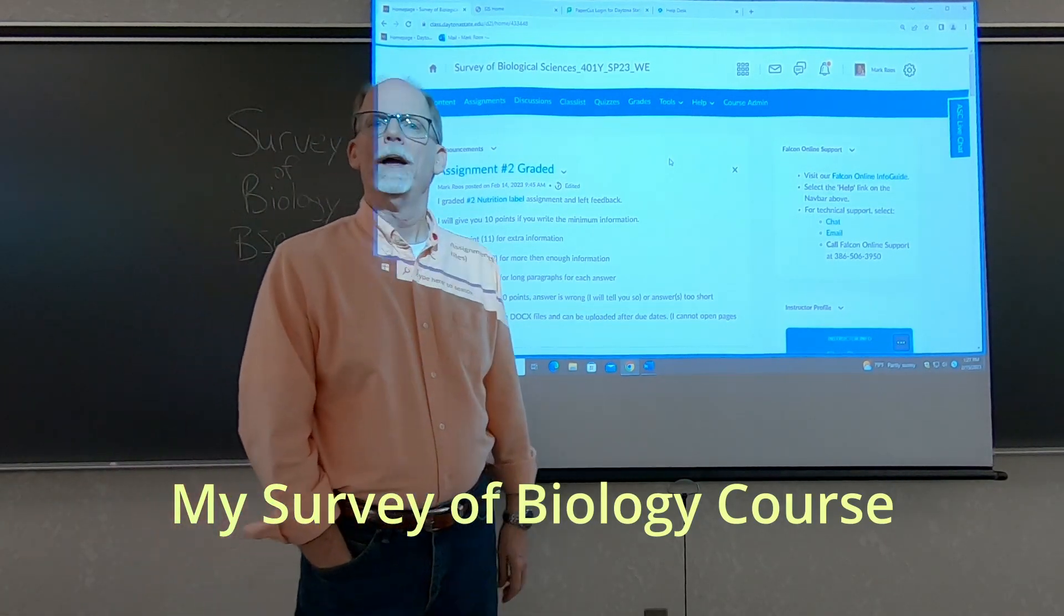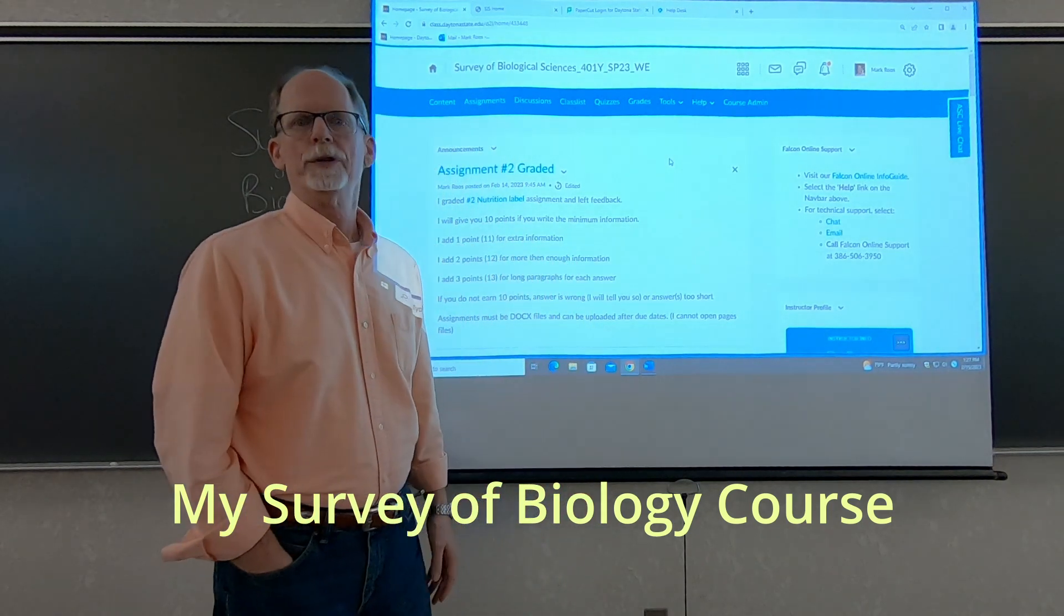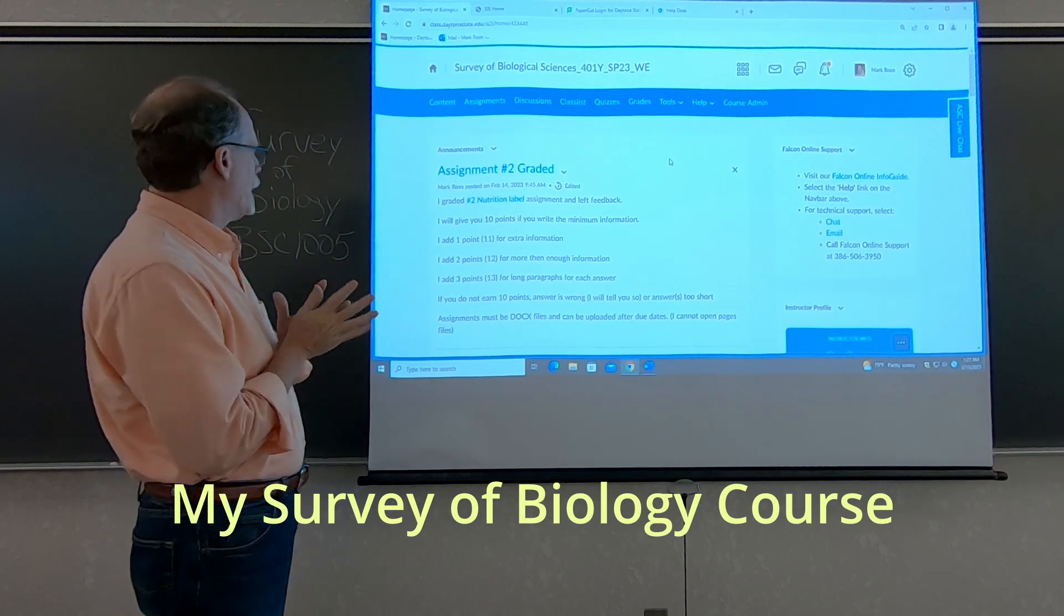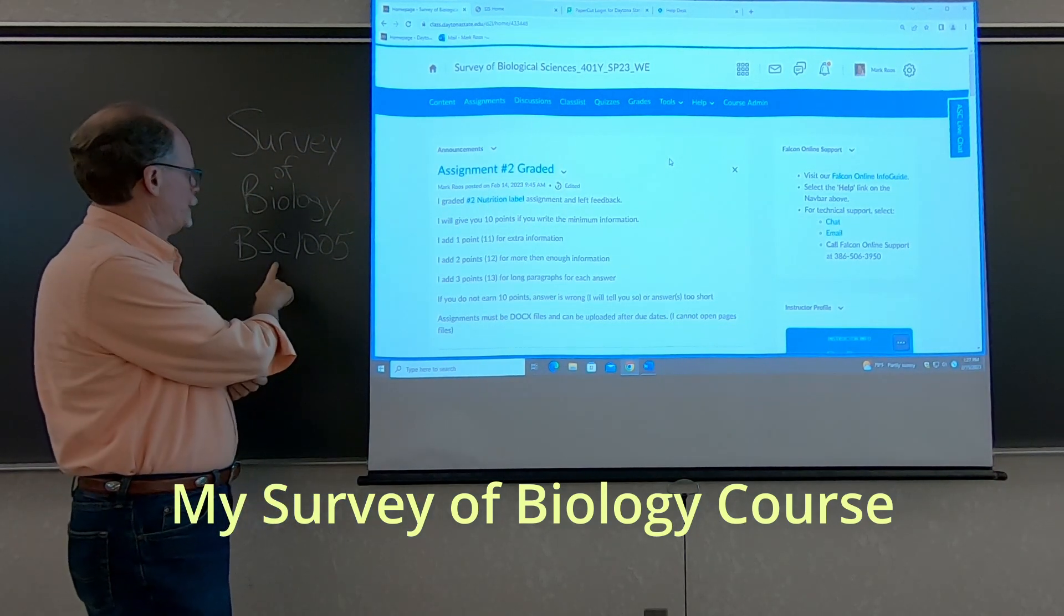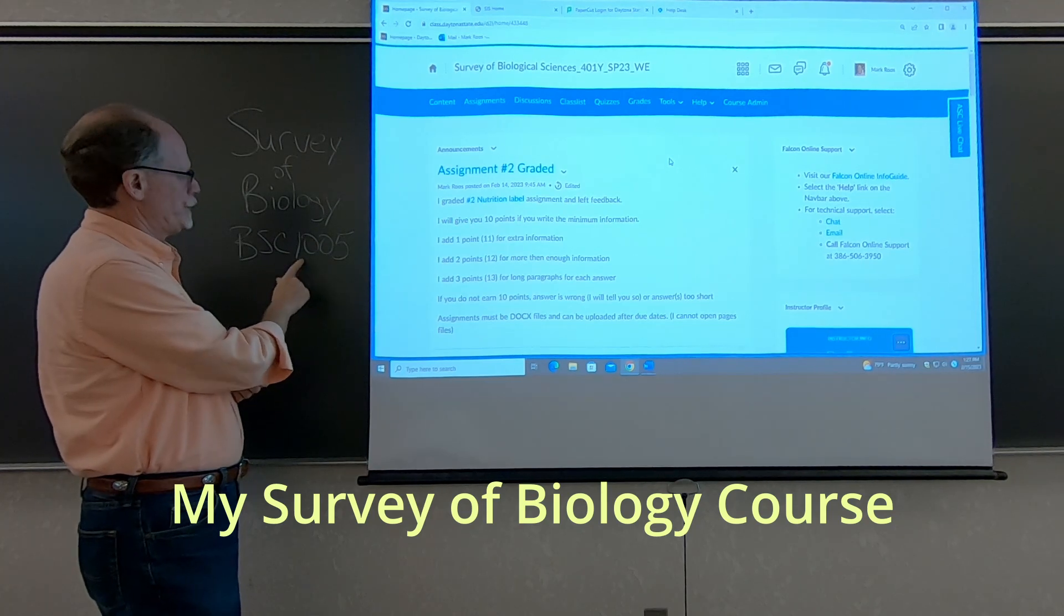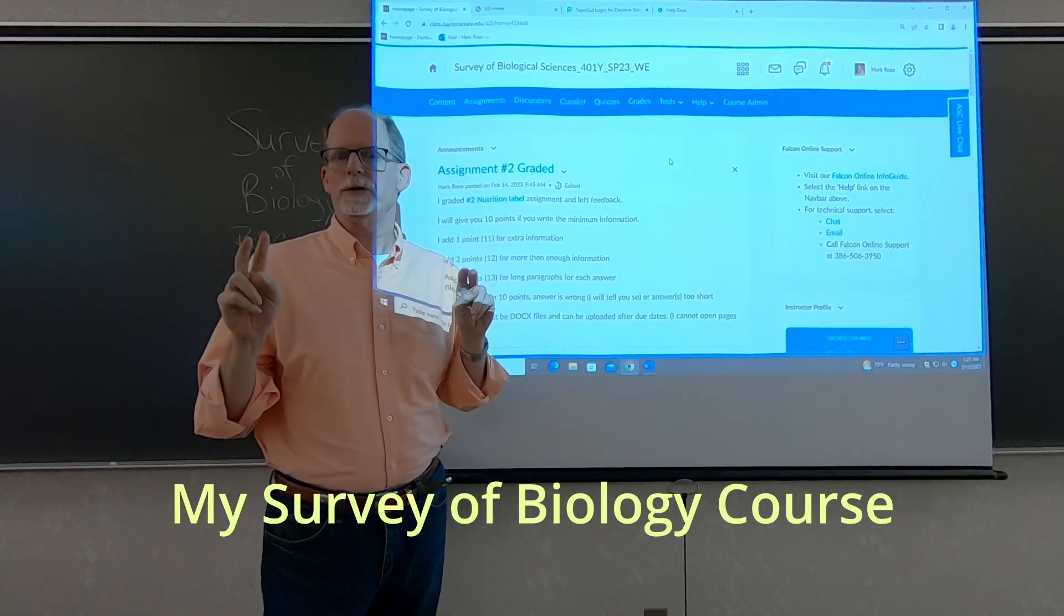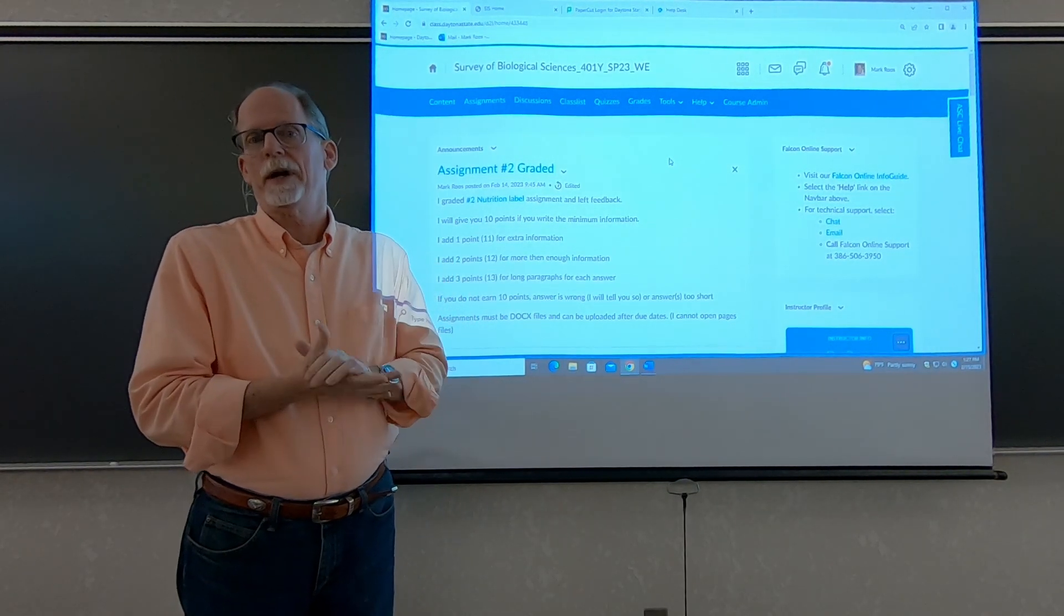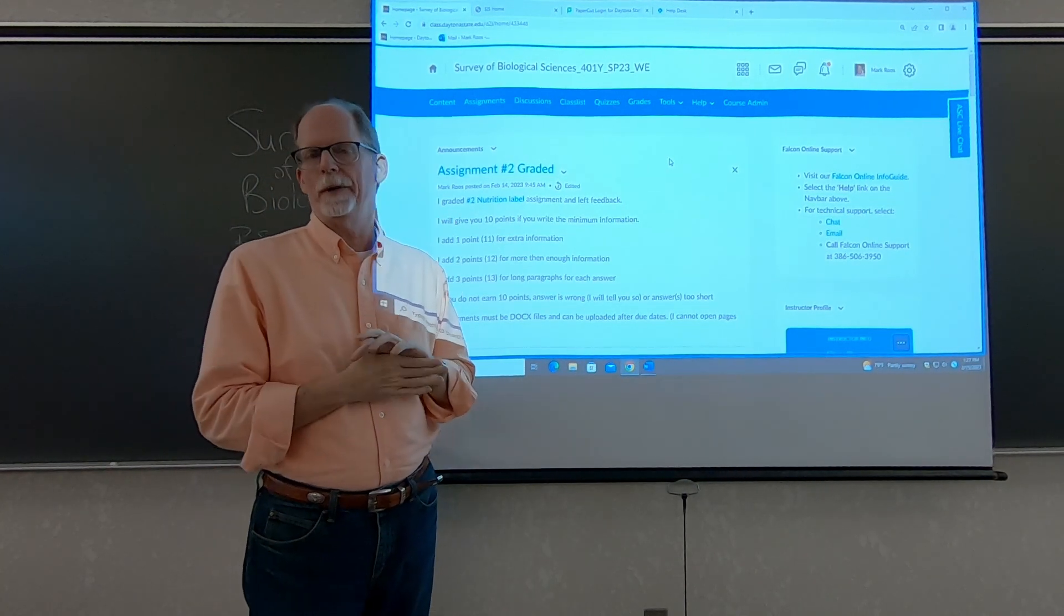Hi, I'm Dr. Roos. I want to make this a hopefully short video for students that are thinking about taking my class. This one's going to be on the Survey of Biology, or the course number BSC 1005, and it's for non-science majors, which just means if you're not intending on becoming a science major, then this is the kind of science elective you might want to take.